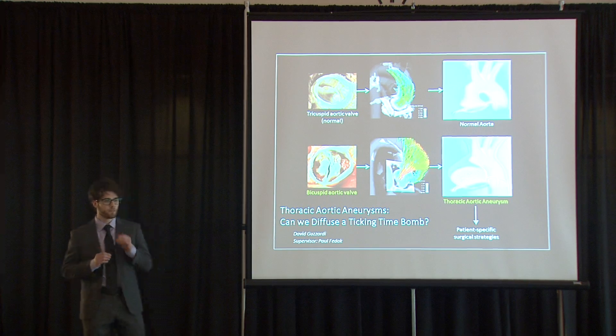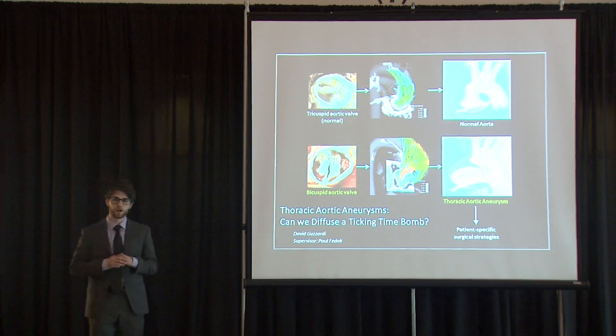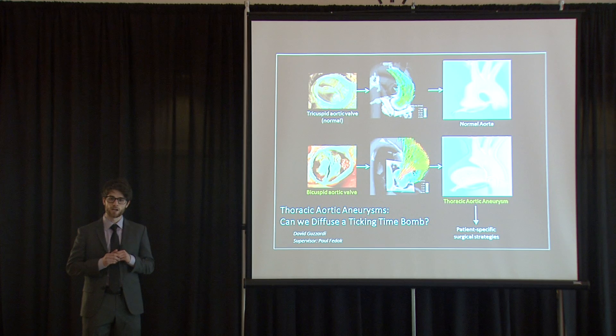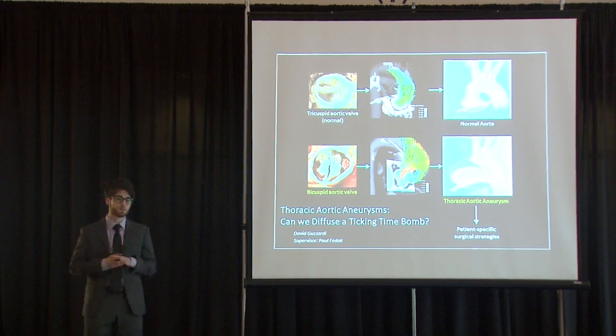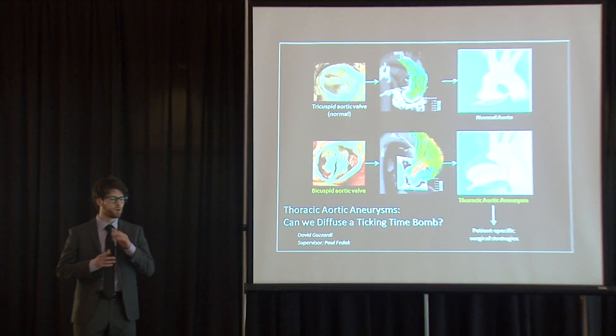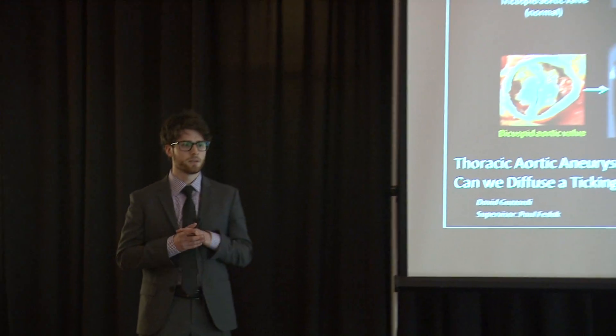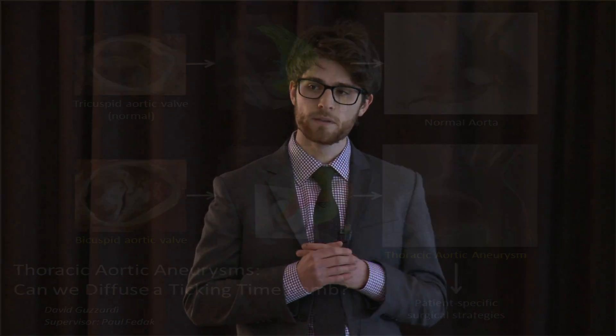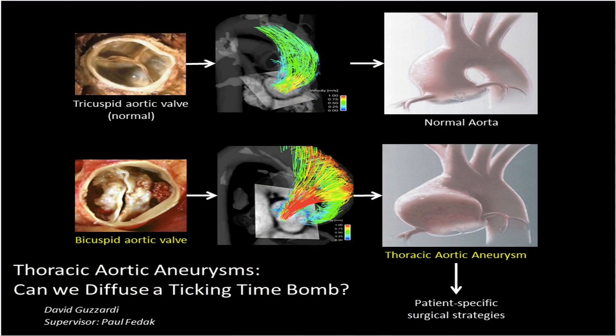One or two of you in this room have a bicuspid aortic valve and most likely an aneurysm in your chest. It's a ticking time bomb and you might not even know you have one. When blood flows from your heart to the rest of your body it flows through your aortic valve, which for most people has three flaps, but for up to two percent of the population with the most common inherited heart defect, there are only two flaps — and this is the bicuspid aortic valve.